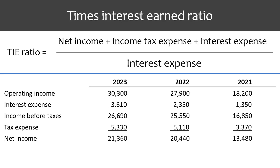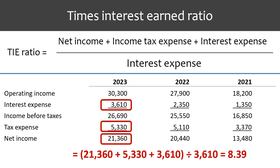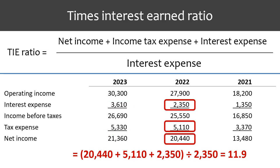We are going to calculate the times interest earned ratio for each year. To calculate the times interest earned ratio for the most recent year, we would take the net income plus tax expense plus interest expense and divide the total by interest expense. Here we get 8.39 for the most recent year. We will do the same process for the prior year, taking net income plus tax expense plus interest expense divided by interest expense. We arrive at 11.9 rounded for that prior year.